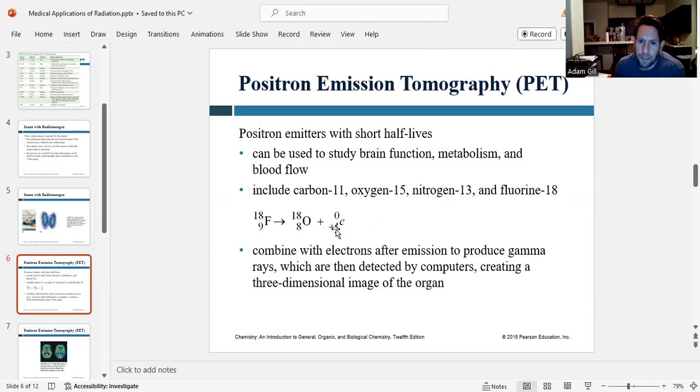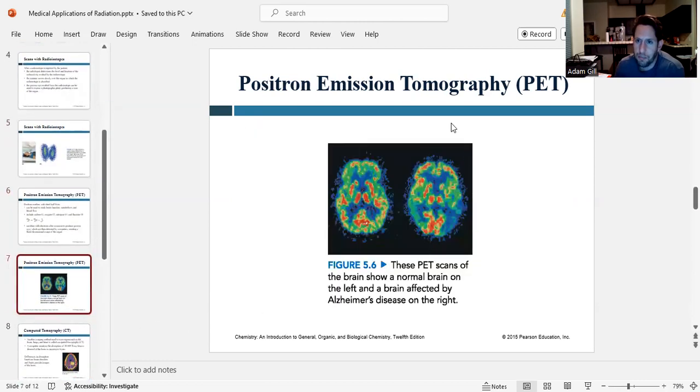And so once these positrons are emitted, they combine with electrons in the environment after emission to produce gamma rays, which are then detected by computers creating a three-dimensional image of the organ. So here's just an example of a PET scan of somebody's brain. So here's a normal brain on the left, and a brain from somebody suffering from Alzheimer's on the right. And you can see the differences in brain tissue. And these images are from detecting the radiation being given off after the patient ingested the radioisotope.